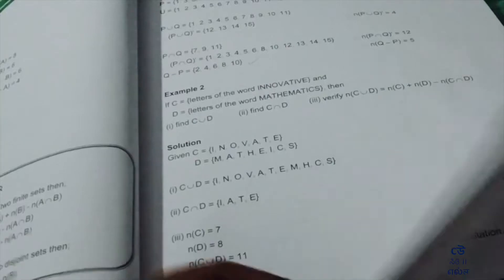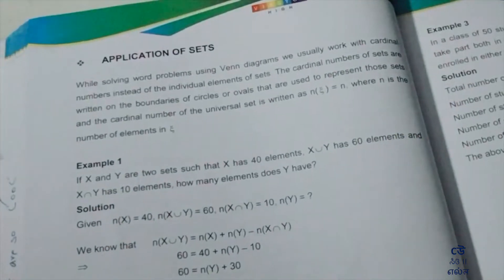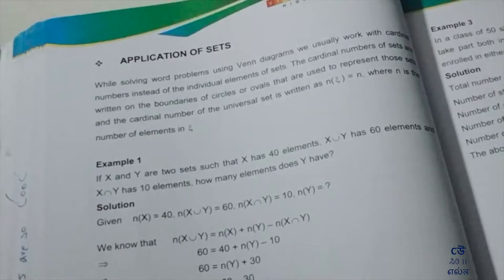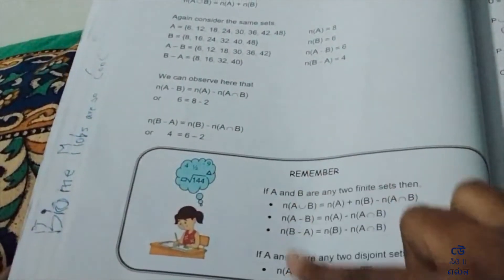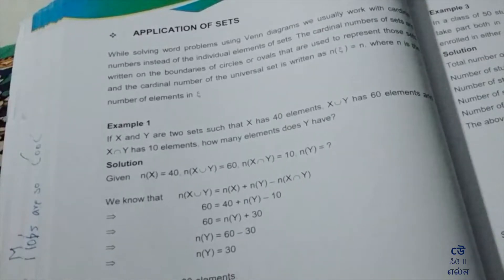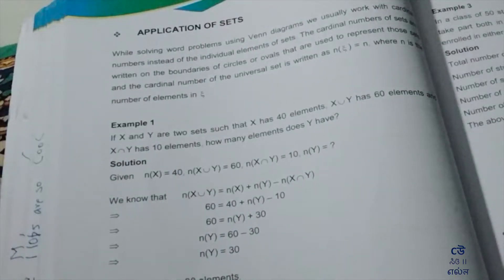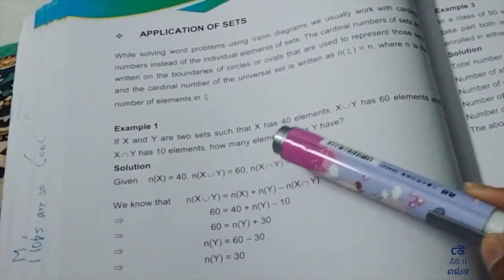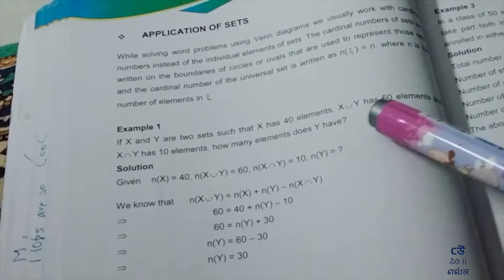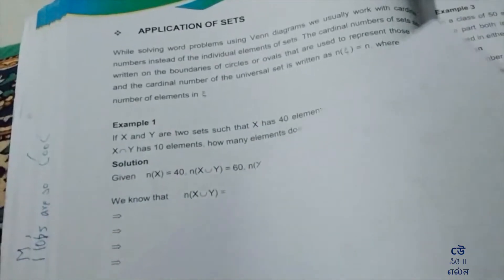These are the four formulas and properties of sets. Now applications of sets - word problems using Venn diagrams with cardinality. Using these four formulas for word problems.